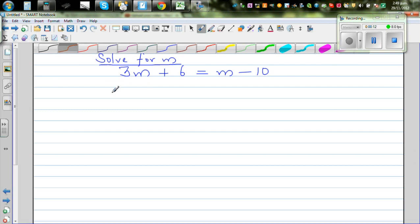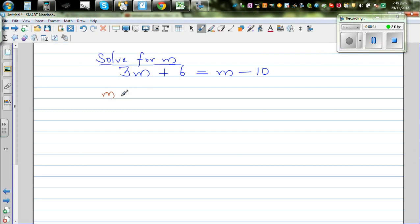I'm going to write this as m plus 2m plus 6. So this is 3m, plus 6 I'm going to write as 6.